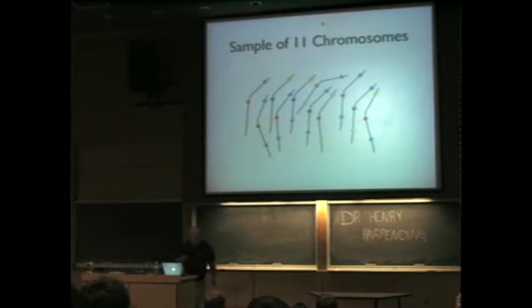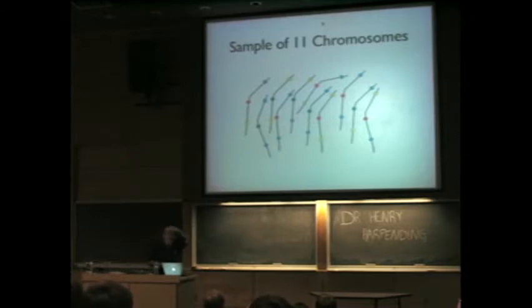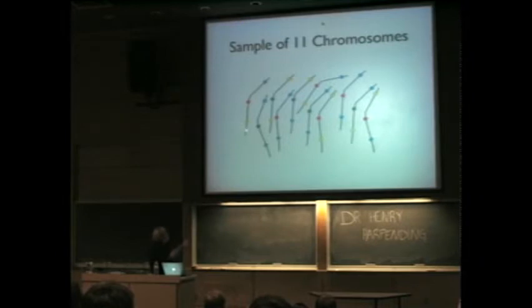Roughly, if we look at a pair of human chromosomes, we'll find such a difference every thousand bases. We're only showing here the differences among the chromosomes — where there are solid lines, it means everybody's the same. But about every thousand bases, we'll find this difference.